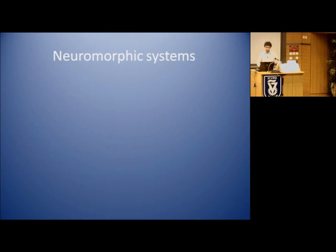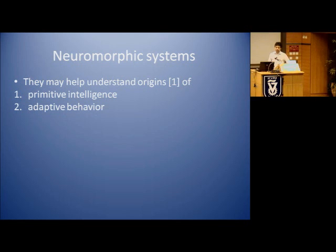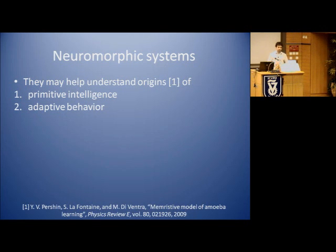Neuromorphic systems may help us understand the origins of adaptive behavior and primitive intelligence. This paper from Massimiliano Di Ventra is very interesting, where he showed how you can replicate the behavior of unicellular organisms by using a memristor-based oscillator. You can reproduce all the adaptive behavior of the amoeba that is able to learn from changes in the environment and anticipate the next stimulus to come.